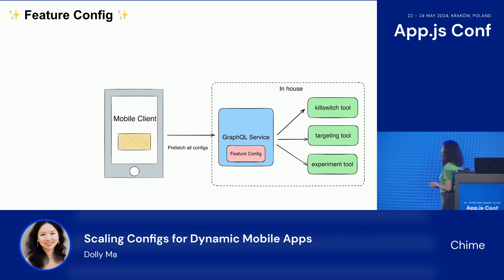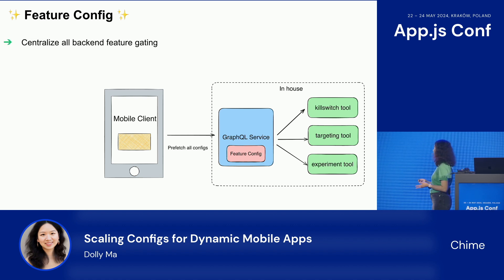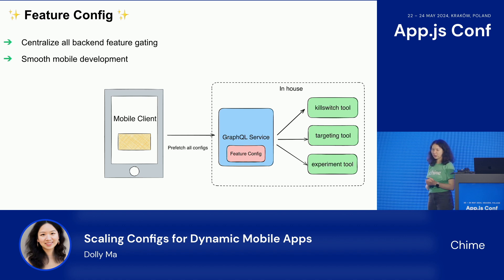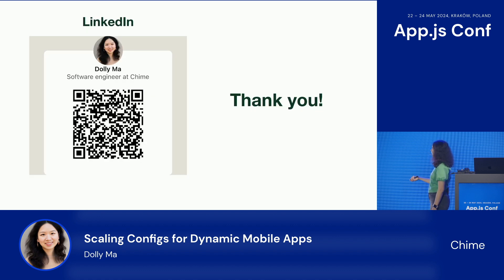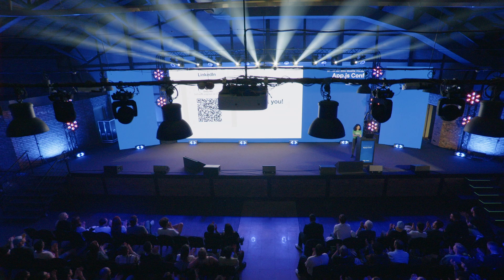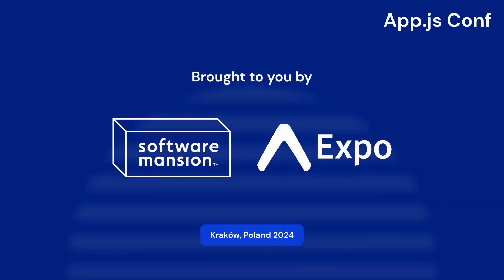In summary, feature config has centralized all the backend feature gating for Chime. With prefetching all configs at app launch, we have a smoother mobile development experience. I hope today's talk is helpful if you want to do something similar at your company. Here's my LinkedIn if you have any questions about error handling, caching, or other nuanced parts of the process. Thank you.